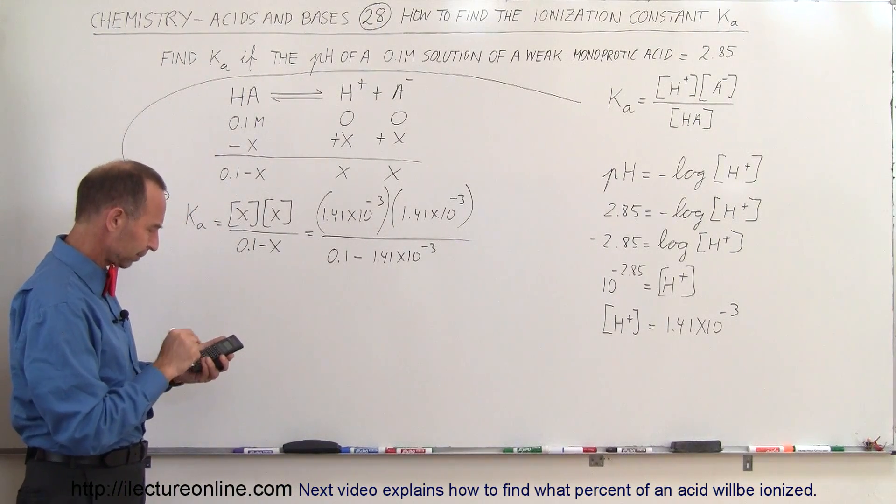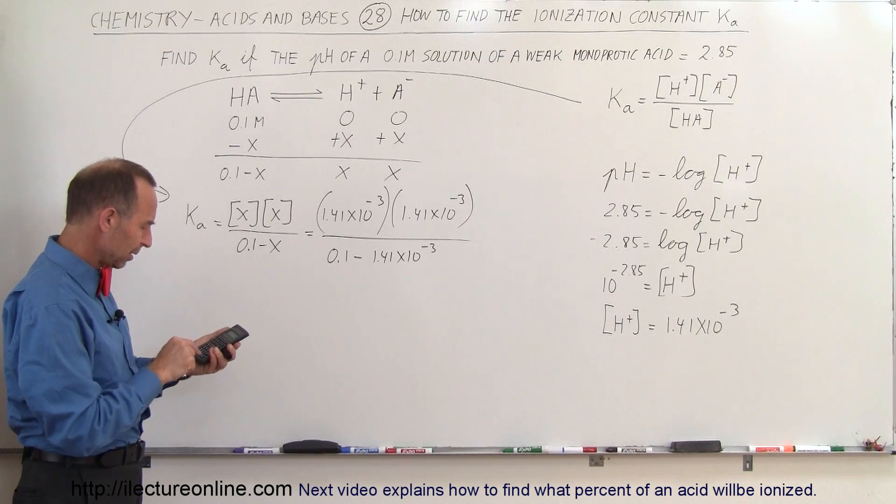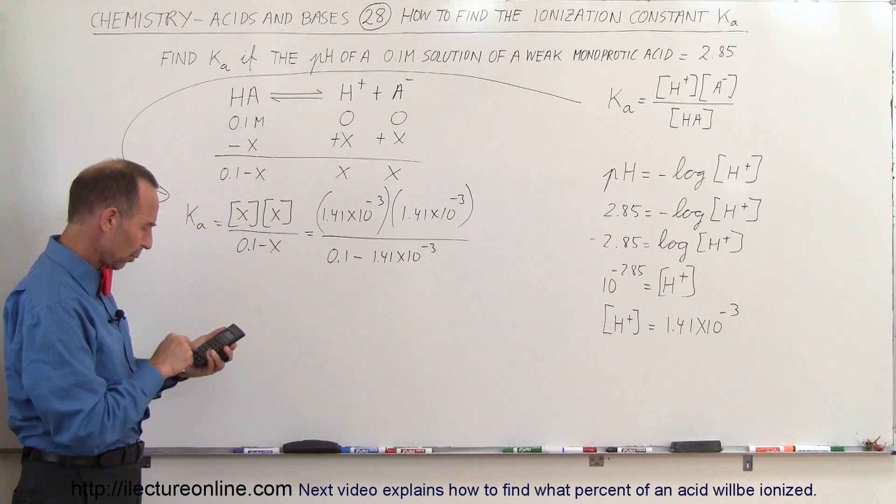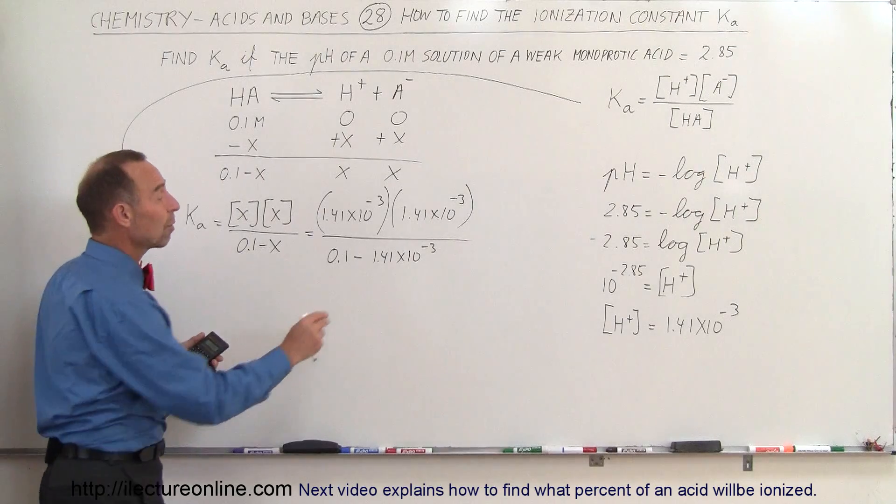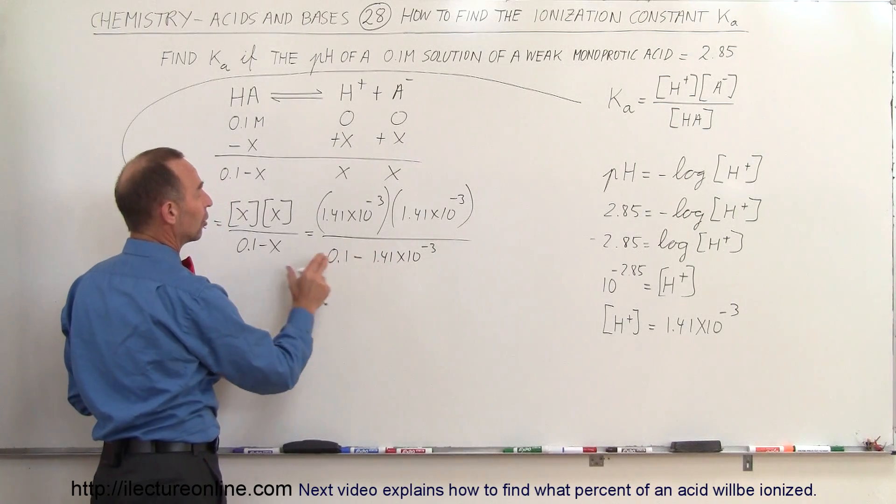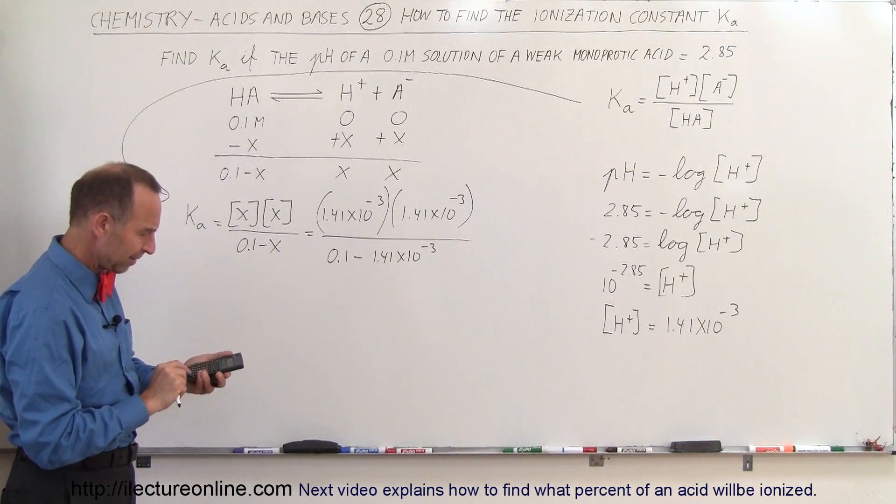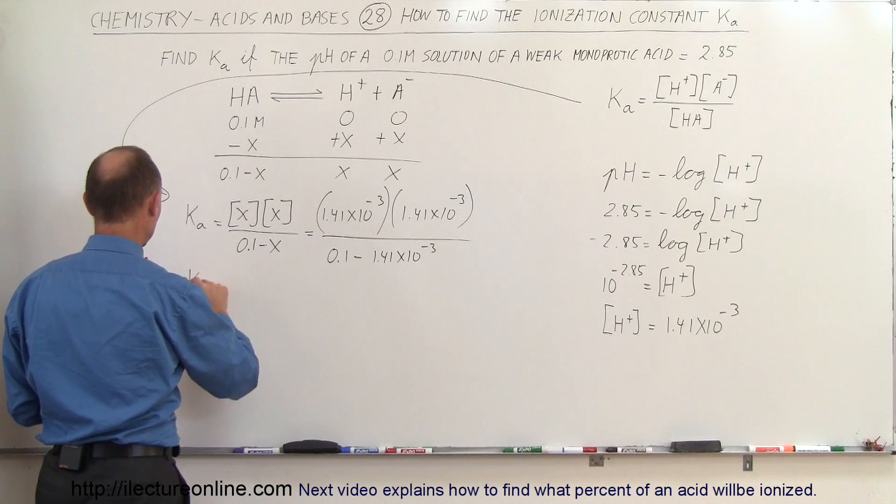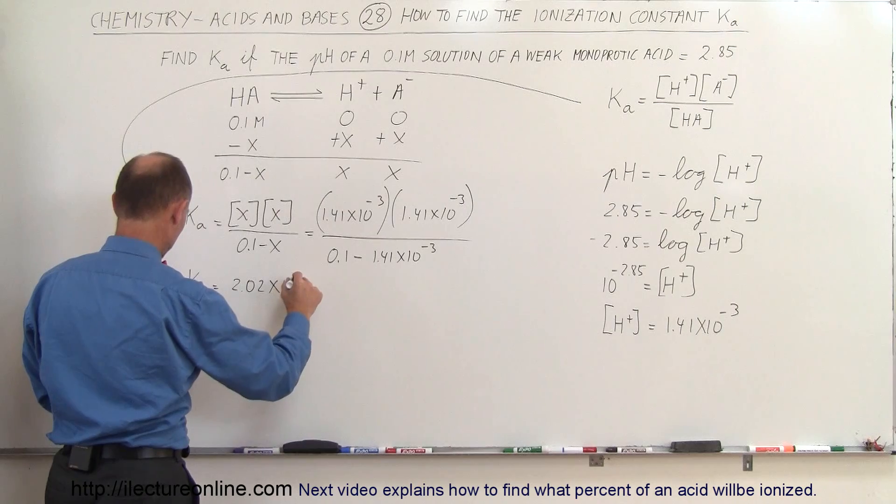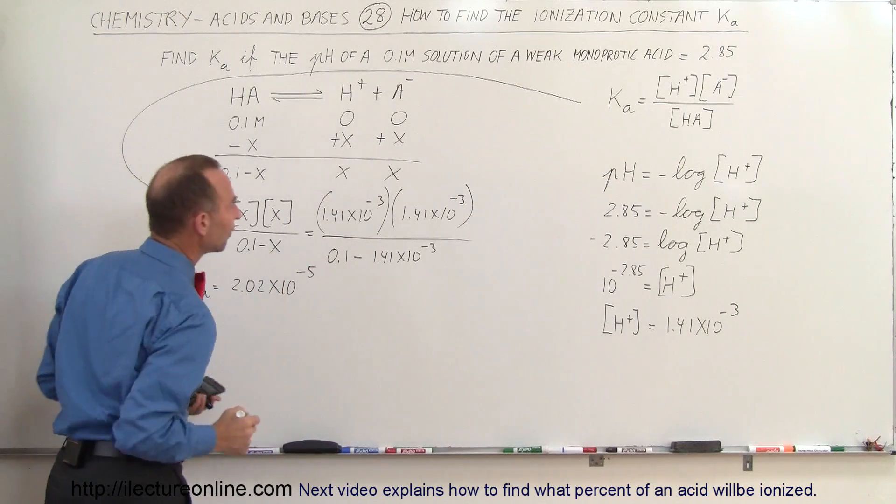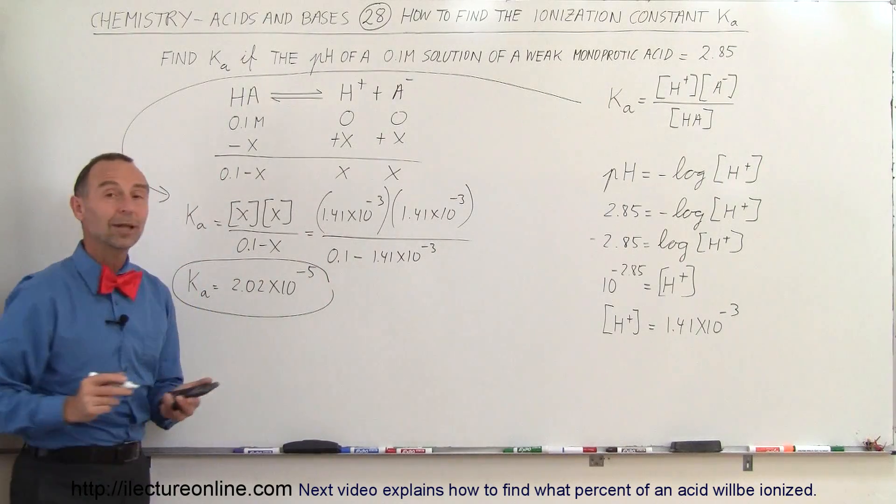All right, so let's square this. And then divide that by the quantity 0.1 minus 1.41 times 10 to the minus 3. If x is small enough, we can just go ahead and call the denominator 0.1. But in this case, it's not really that small, so we probably don't want to do that. And so we end up with Ka is equal to 2.02 times 10 to the minus 5. And that looks about right. And so that would then be our answer. And that's how we do that.